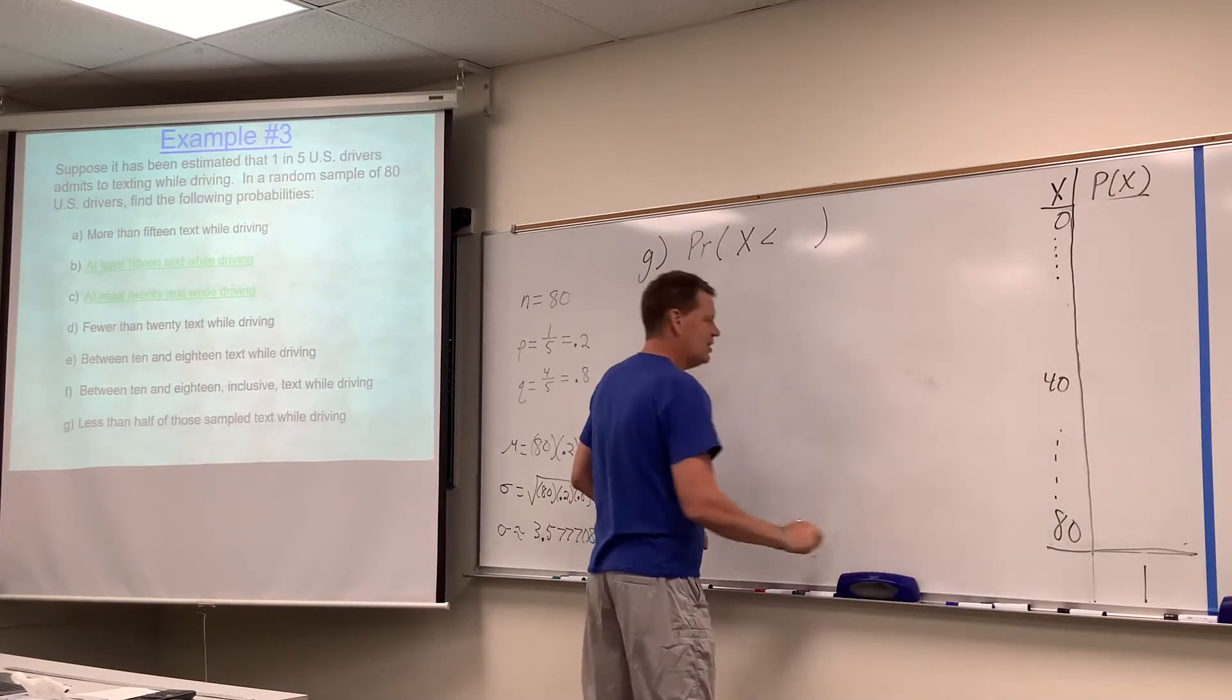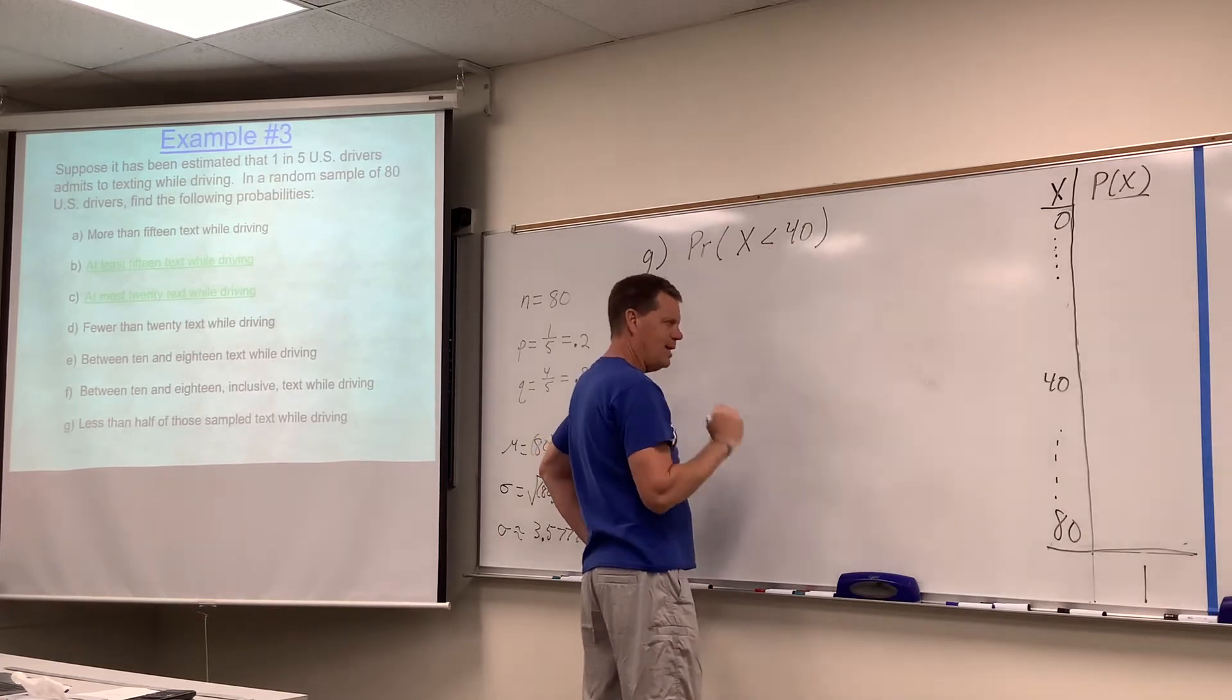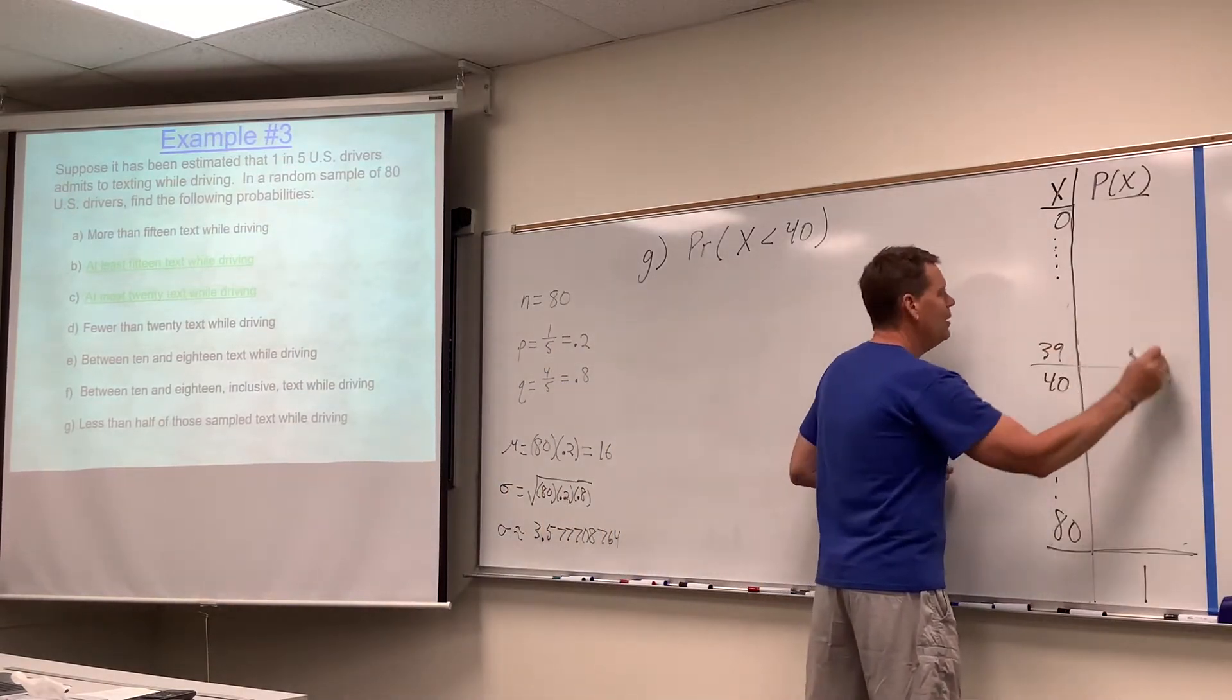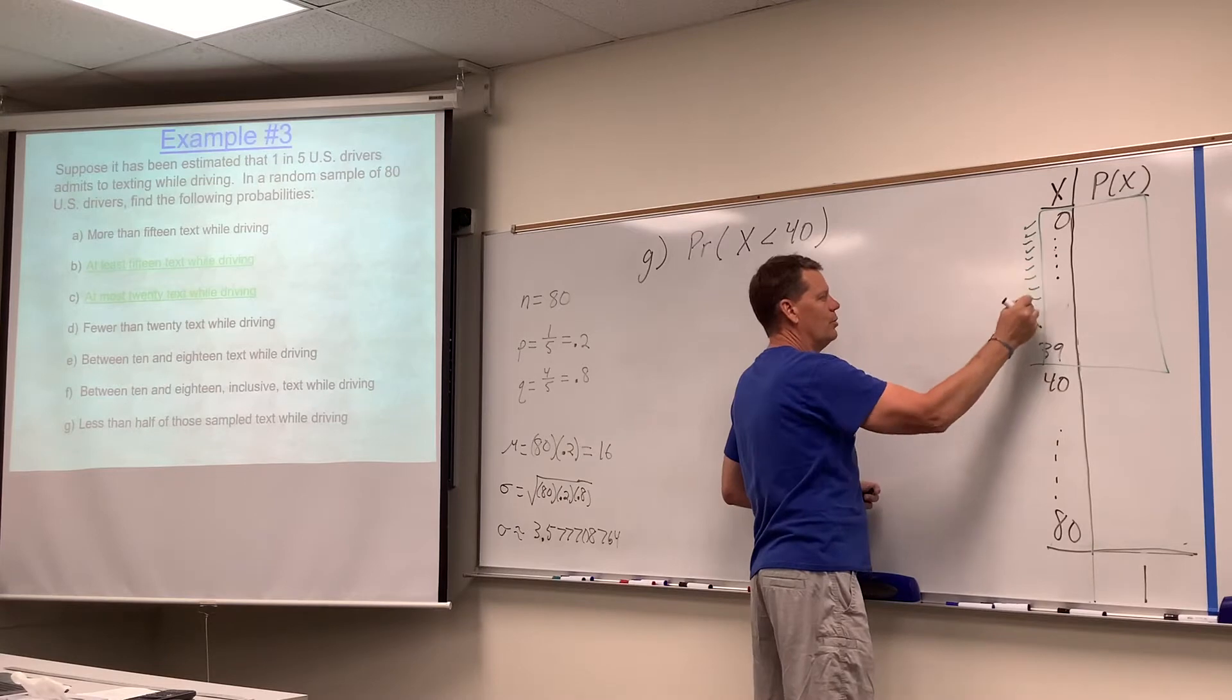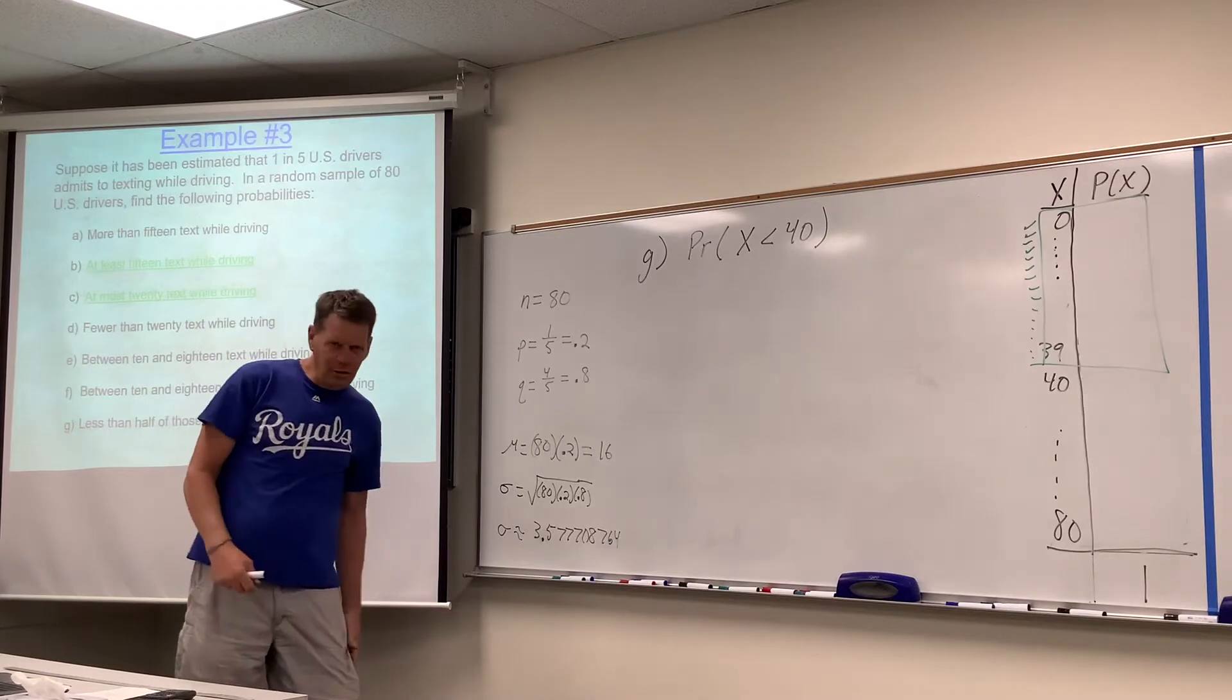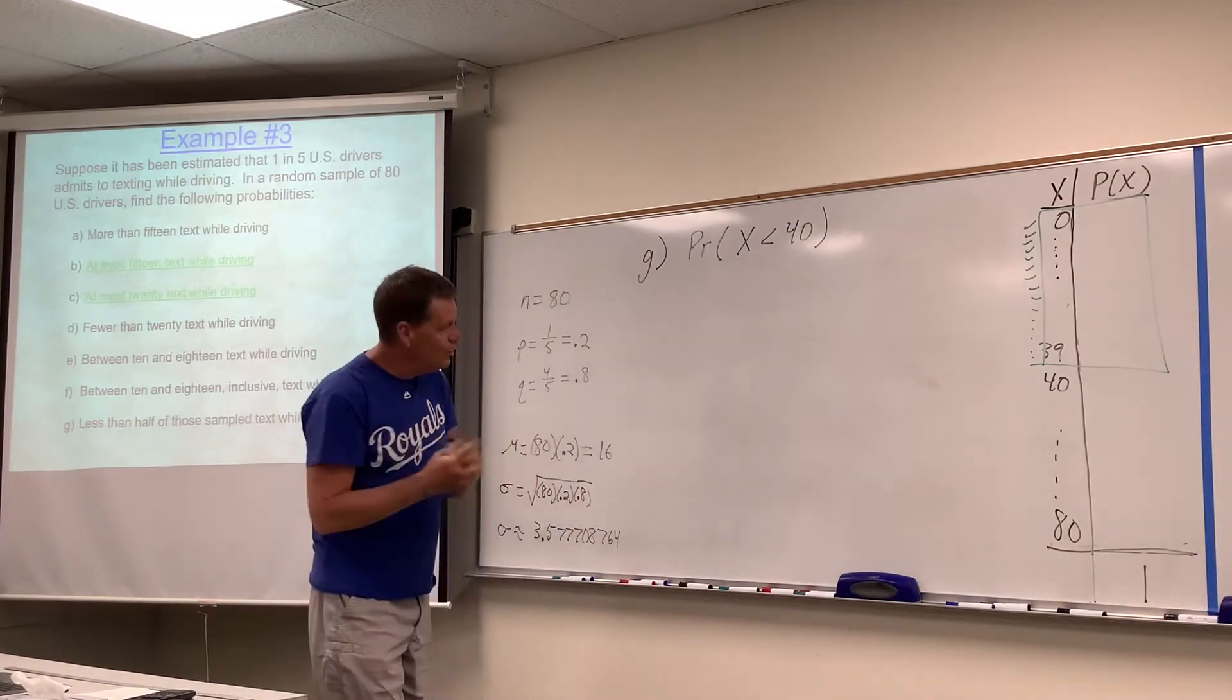What's the probability that less than half of all those surveyed? Half of 80 is 40. Now, less than 40 does not include 40 - that's important. We're talking about this range of numbers from 39 all the way down to zero. If it's a really wide range of numbers, the formula approach from assignment 15 would work and be exact, but it would take forever.